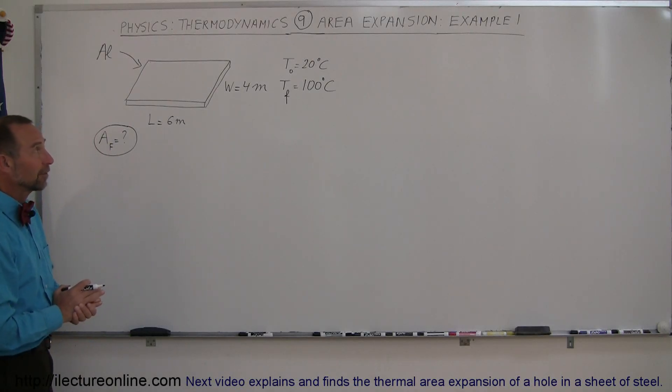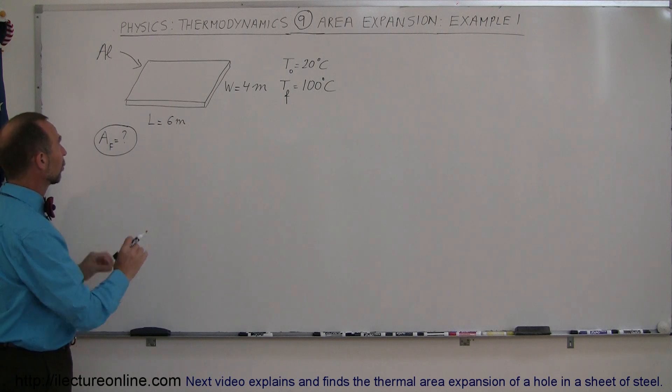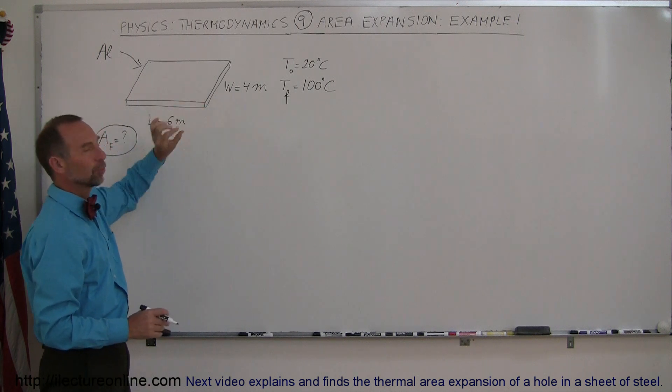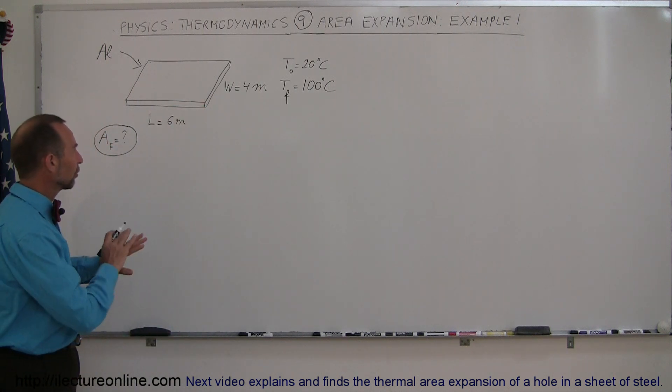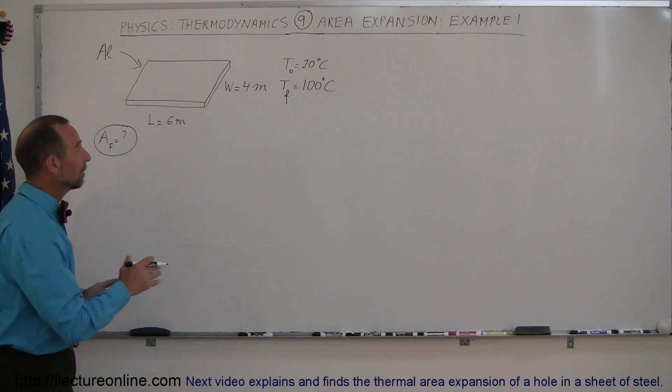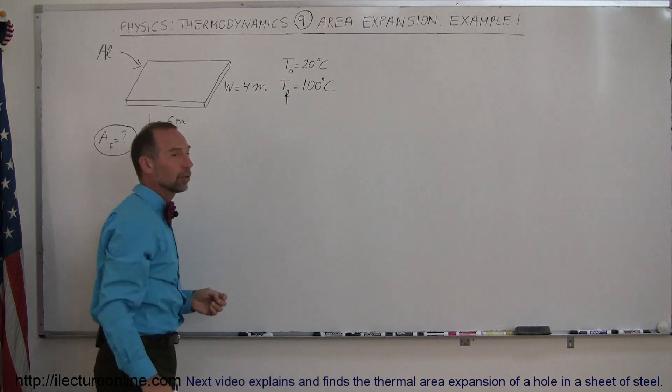Here's our first example of how to calculate the change in area of a slab. In this case, it's an aluminum metal plate. Let's say the length is 6 meters, the width is 4 meters. Of course, we're ignoring the thickness, that's not important. We just want to know how much the area has changed. What is the new area now if we increase the temperature from 20 degrees centigrade to 100 degrees centigrade?